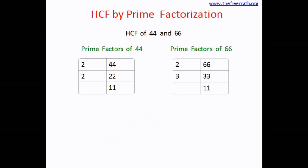The prime factors for 44 are 2, 2, 11 and for 66 are 2, 3, and 11. So what we see here the common factors are 2 and 11.